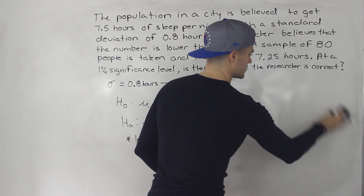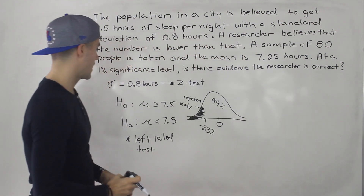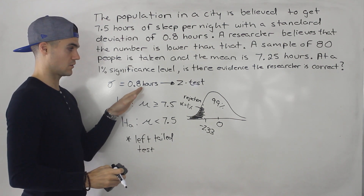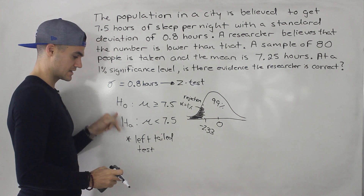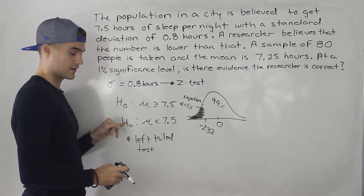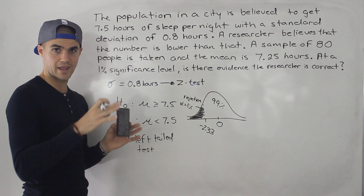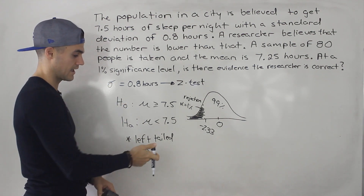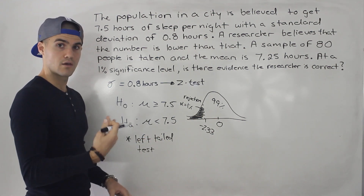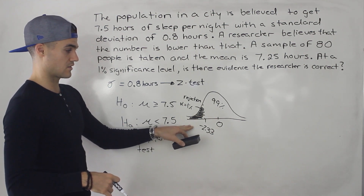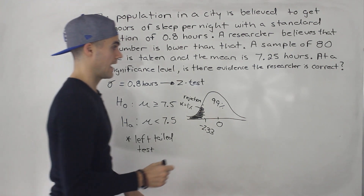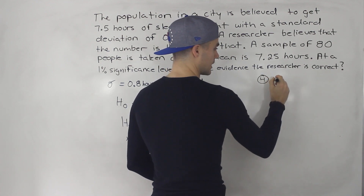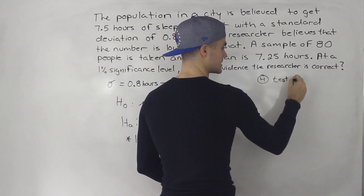Let's do a quick review of what we've done so far. Step one: is the population standard deviation known? It was known, so we do a Z test. Step two: set up the null and alternative hypothesis to determine whether we're doing a two-tailed or one-tailed test, and whether it's left or right — it's a one-tailed left-tailed test. Step three: get the critical value. Step four: get the test statistic.